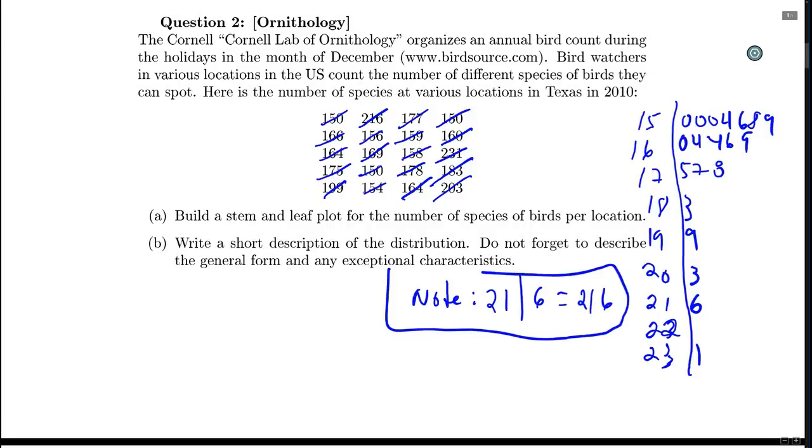In part B, we want to describe the distribution. If we try to describe the symmetry, we see that the atypical values or the tail of my distribution extends to the right, for the large values. So this would say skewed to the right. And then we have some very large values, for example 231. We should identify it as being a potential outlier, and also that we have four values between 183 and 216.